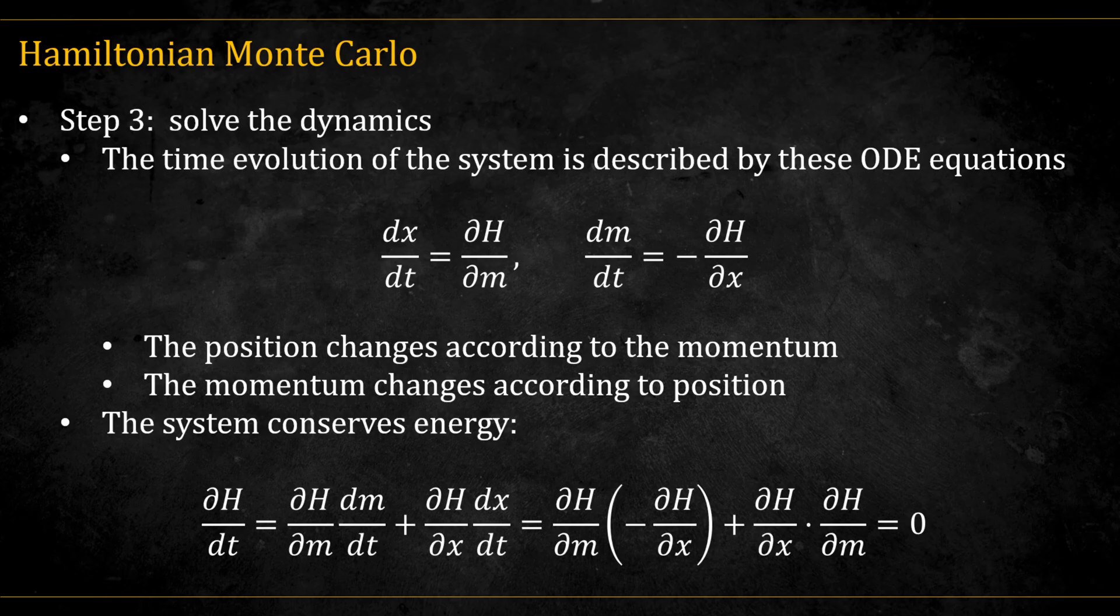The Hamiltonian equations of motion are expressed as a pair of simple ordinary differential equations. They may look intimidating at first, but all they really say is that the position changes according to the momentum, and the momentum changes according to the position. With this setup, and by applying the chain rule of differentiation, we can show that the system conserves total energy.